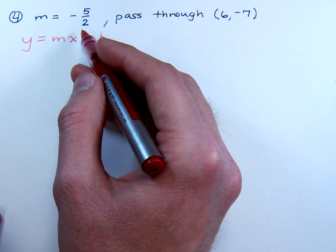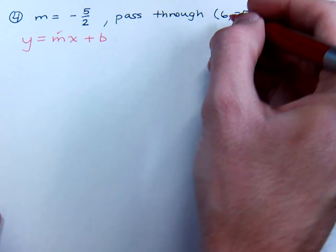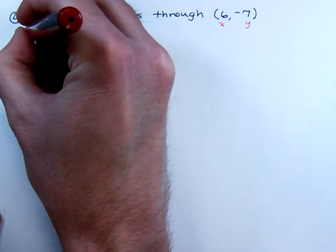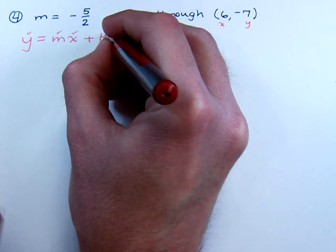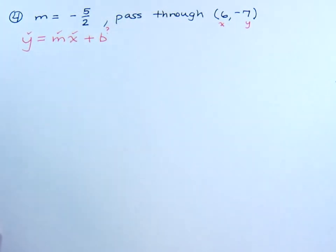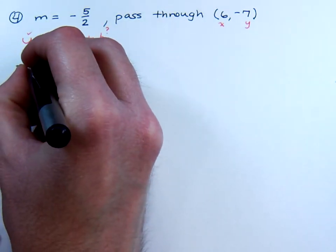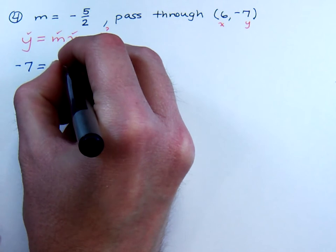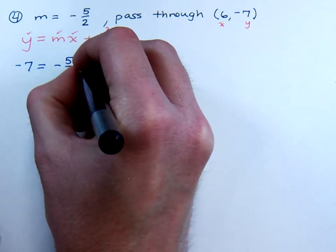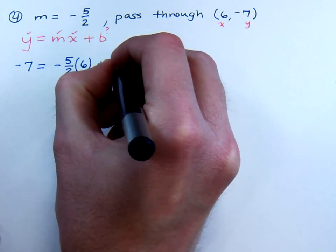So you're going to use this slope right here, along with the x and the y-coordinates that I gave you. So you've got your x, you've got your y, and you just don't know your b. So let's plug these guys in and see what happens. My y-coordinate is negative 7. My slope is negative 5 halves. My x-coordinate is 6. And I'm just going to figure out what my b is.